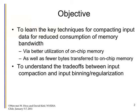We're trying to learn the key techniques for compacting input data for reduced consumption of memory bandwidth, so that we can use on-chip memory more efficiently and also transfer fewer bytes from DRAM to on-chip memory. In many ways, the second one could be even more important than the first. Sometimes you may have enough memory to hold everything you need, but by transferring some unnecessary bytes from DRAM to on-chip memory, you actually reduce the bandwidth reduction you're trying to accomplish. I also hope to help you understand the trade-offs between input compaction and input binning regularization.